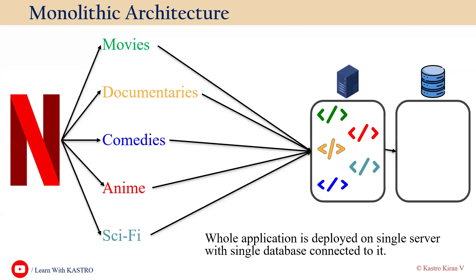With monolithic architecture, there is a single database, which we call a shared database. For movies-related code, documentaries-related code, and comedies-related code, it's all the same database. All functionalities of the application share a single database.